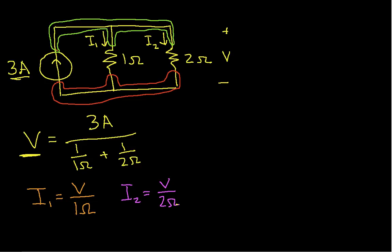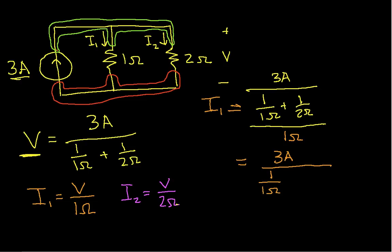So let's start with I1. We have I1 is V, which in this case is 3 amps over 1 over 1 ohm plus 1 over 2 ohms. And this whole thing is divided by 1 ohm. How on earth are we going to do this? Well, that's actually a good question. Basically, another way to write this is 3 amps over 1 over 1 ohm plus 1 over 2 ohms times 1 over 1 ohm.